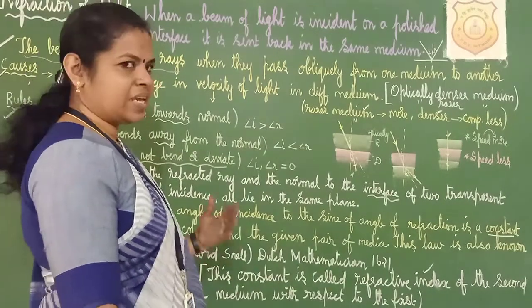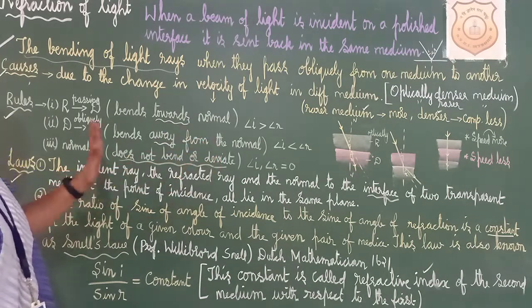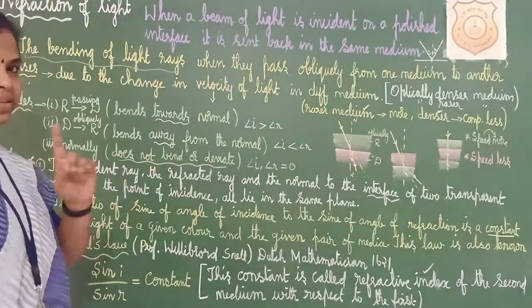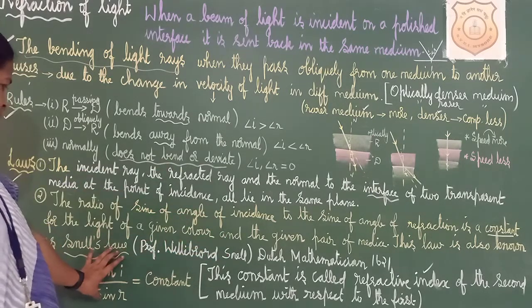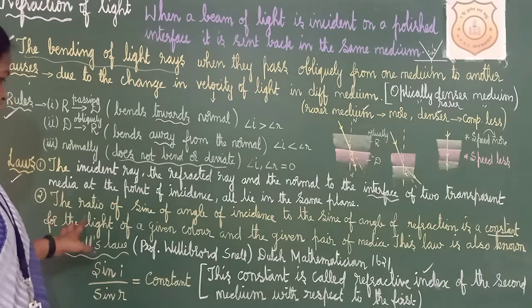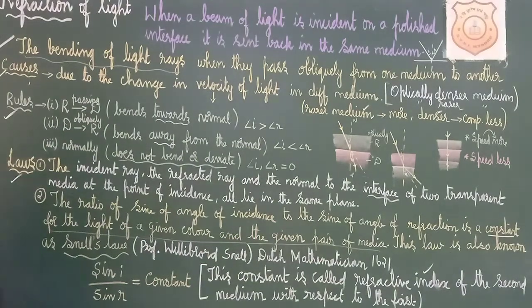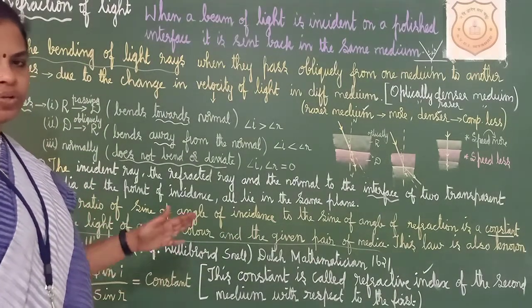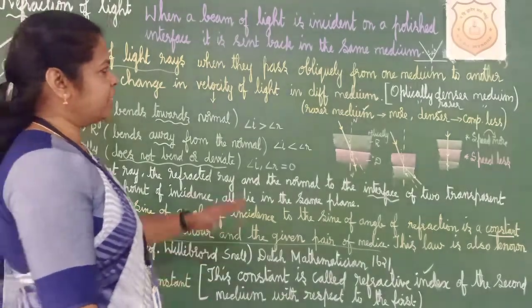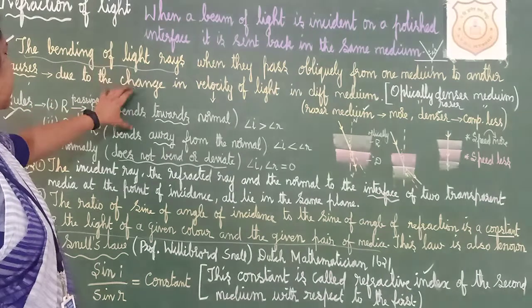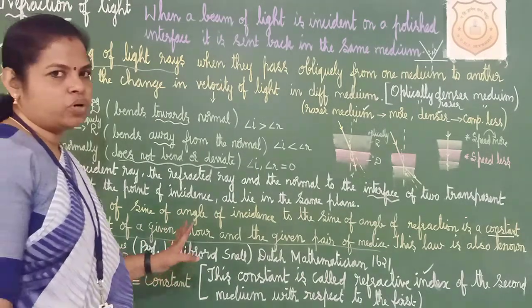This constant is called the refractive index — specifically the refractive index of the second medium with respect to the first medium. We will study what refractive index is in the next class. To repeat: first law — incident ray, refracted ray, and normal at point of incidence all lie on the same plane. Second law (Snell's law) — sin i / sin r = constant, for a given color of light and given pair of media. This constant is the refractive index.